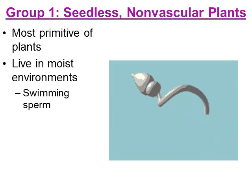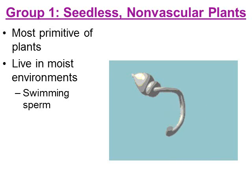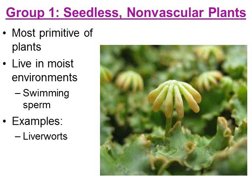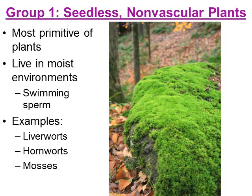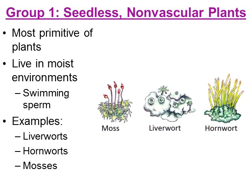Some basic traits of bryophytes: they live in moist environments. Even though they live on land, that land is fairly moist because their sperm needs to swim through water to reproduce, so they have to live near moisture. Here's an example of a liverwort — fairly small to the ground because they are non-vascular. Here are hornworts, also very small, no more than an inch or two tall. And here's something we've all seen — moss growing on a rock or in cracks on the sidewalk. The scientific classification for all three is bryophytes.